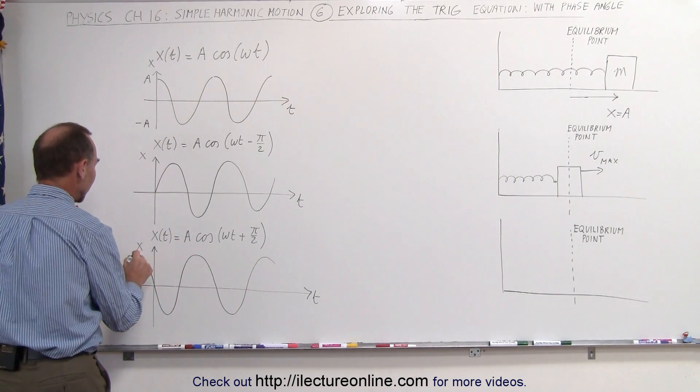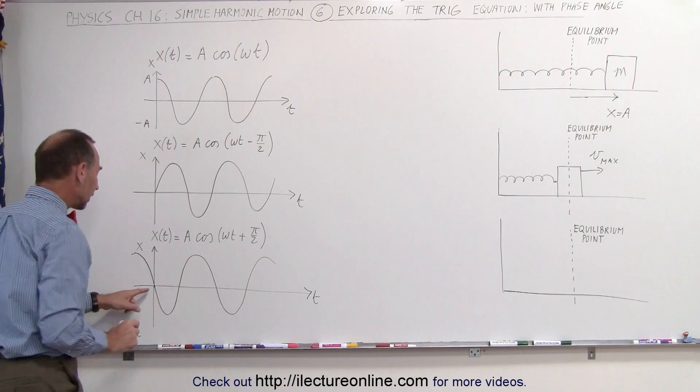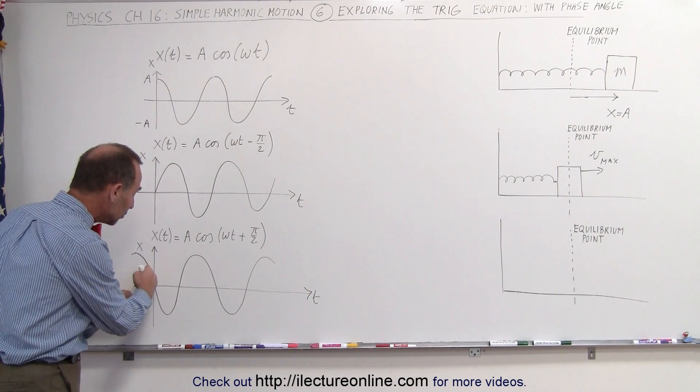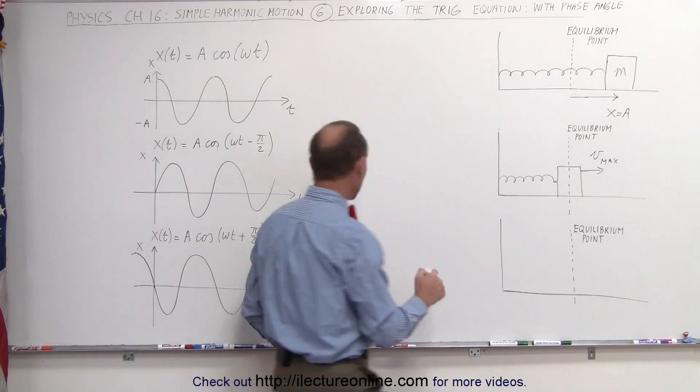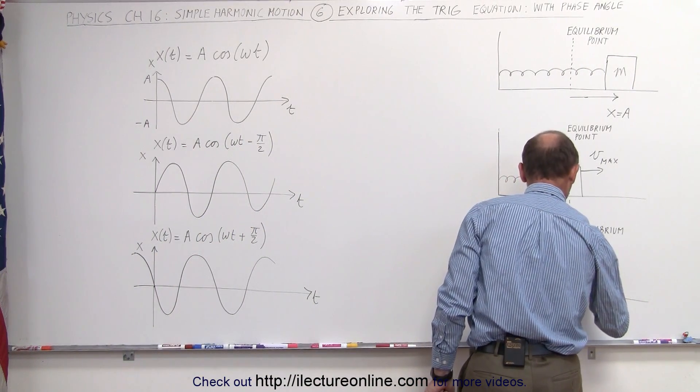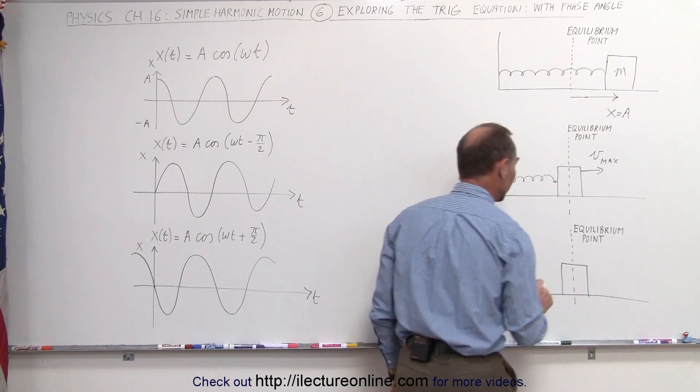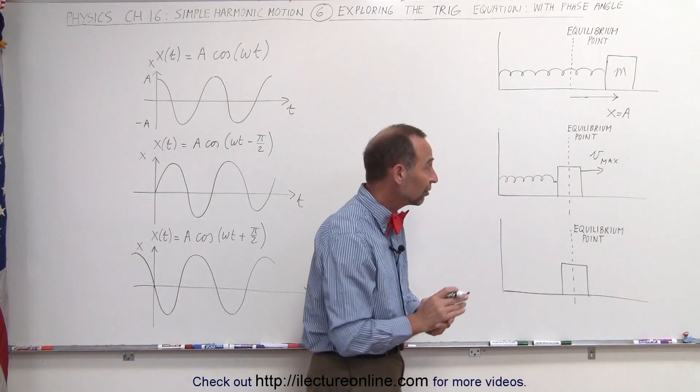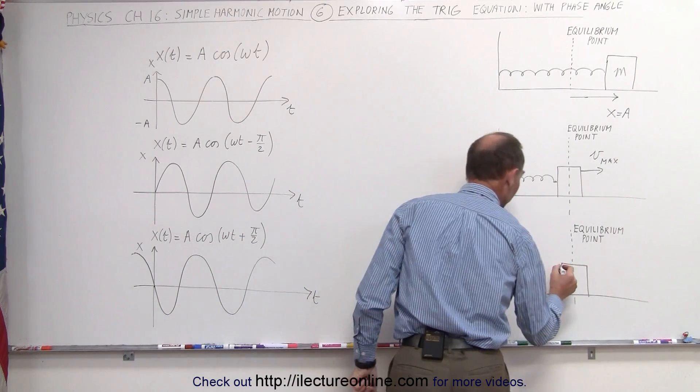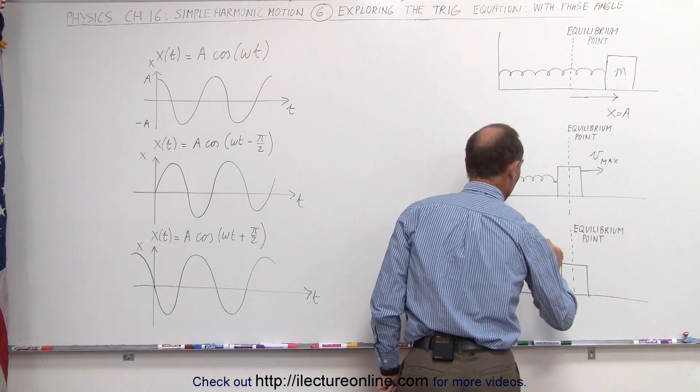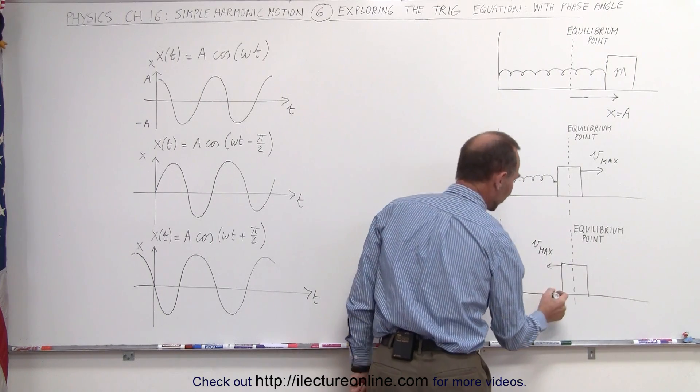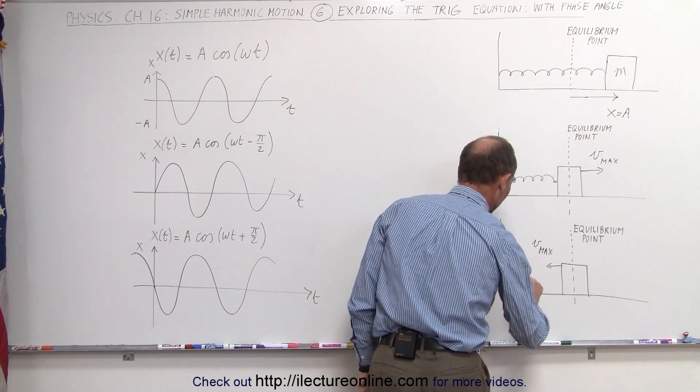Now you see that at time equals 0, the block is also at the equilibrium point, but as time then moves on, it's actually moving in the opposite direction, which means this particular equation represents the block being in the exact same spot at the equilibrium point, at time equals 0, but instead of moving to the right, it looks like the block is in the process of moving to the left, and that would be vmax, but in the negative position, so that would be negative vmax.